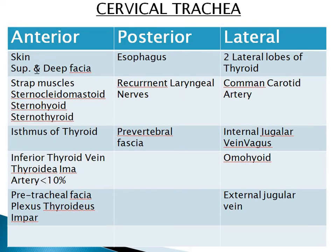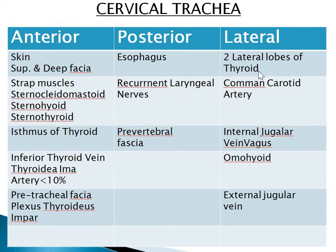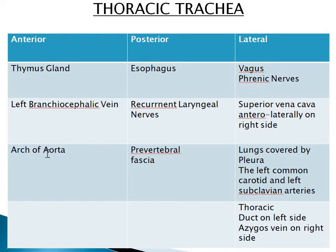The relationships of the cervical trachea: anteriorly lie the skin, superficial and deep fascia, the strap muscles including the sternothyroid, sternohyoid, thyrohyoid, and omohyoid, then the isthmus of the thyroid, the inferior thyroid vein, the thyroidea ima artery seen in less than 10% of patients, the pretracheal fascia, and the plexus thyroideus impar. Posteriorly lies the esophagus, the recurrent laryngeal nerve, and the prevertebral fascia. Laterally lie the common carotid artery, internal jugular vein, vagus nerve, posterior belly of the omohyoid, and the two lateral lobes of the thyroid.